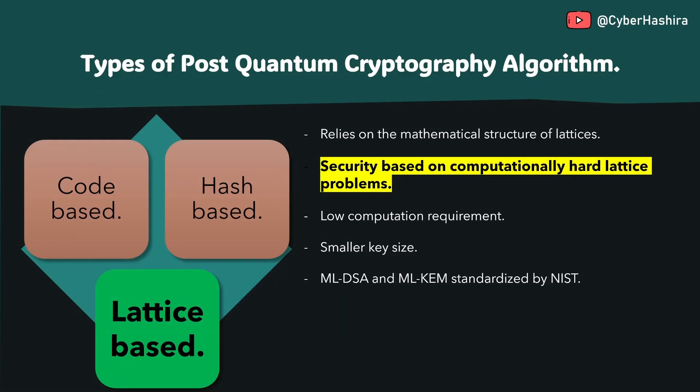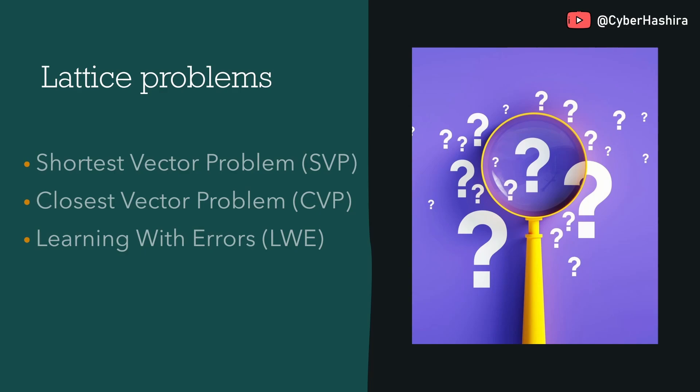The security of lattice-based cryptography relies on the difficulty of solving lattice-based problems. These problems become increasingly difficult to solve as more dimensions are added to a lattice. The foundation of lattice-based cryptography lies in three mathematically challenging problems: the shortest vector problem, the closest vector problem, and learning with errors. I'll leave those topics for you to explore on your own if you're interested.